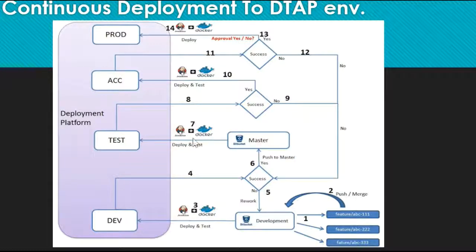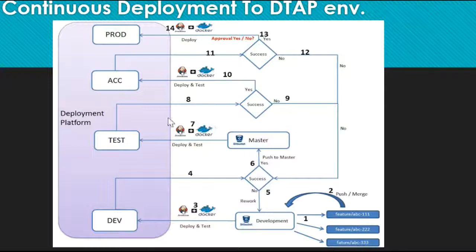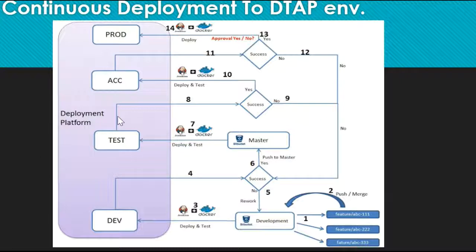The testing team needs to test many things — both functional testing and integration testing with other systems. Once you push all the latest changes to the master branch, the Jenkins job is triggered and the Docker image is deployed to the test environment. The testing team will test all the changes functionally and also perform system integration testing — that means checking if your application connects correctly with other systems and modules. Once the testers are happy with the testing results, the Jenkins CICD pipeline will push the application to the acceptance environment.